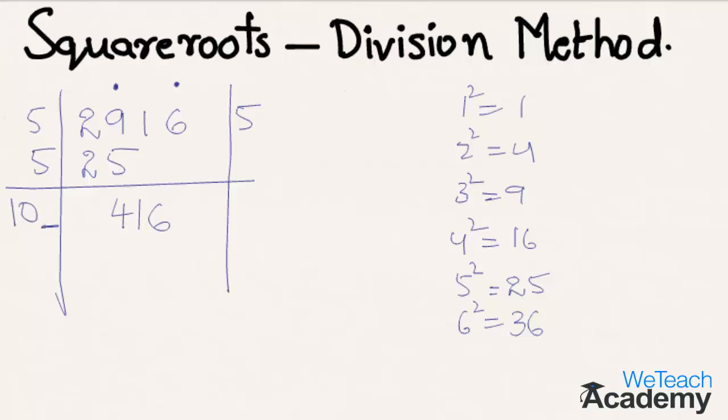What number should be added to 10, and similarly, the same number is multiplied so that we get the result 416? We have to find the number here so that we get the result 416.